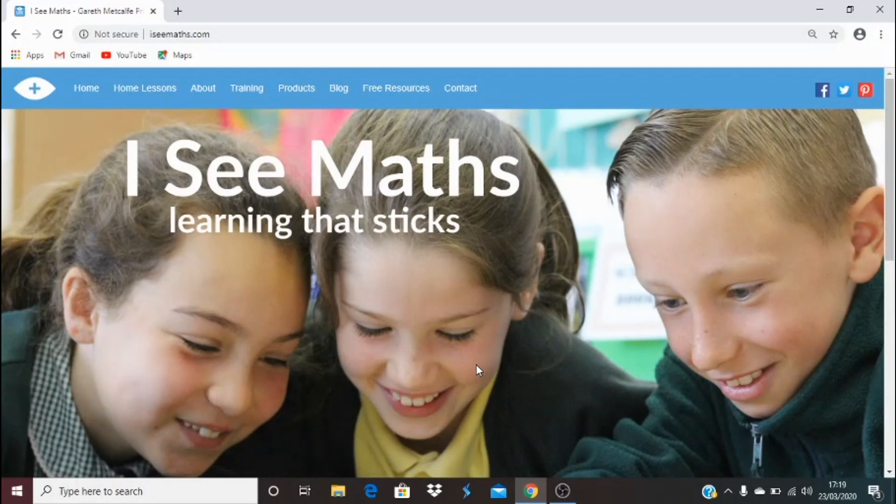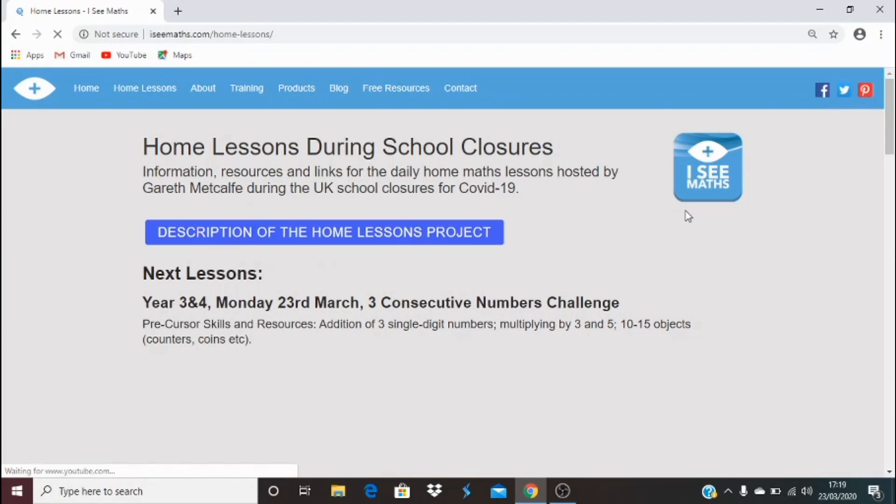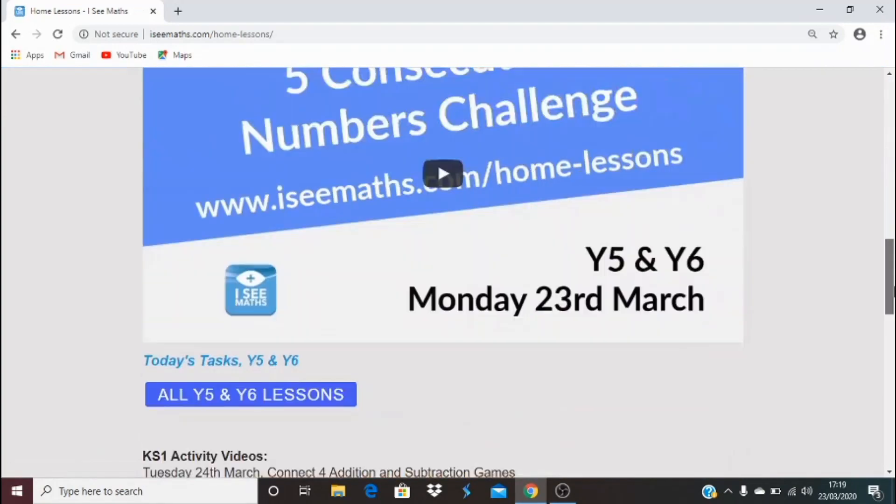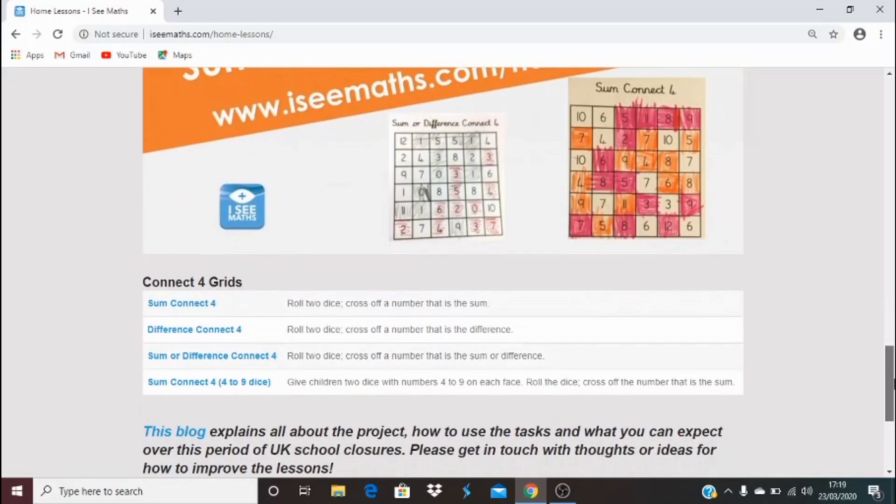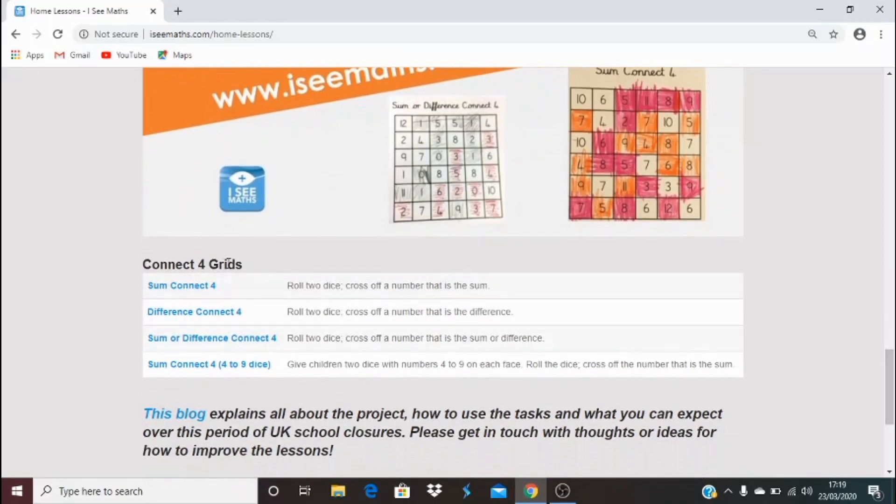To find the videos go to iseemaths.com and click on home lessons. That will bring you to this page and the key stage one activity area is here. Underneath the video you'll find Connect Four grids.